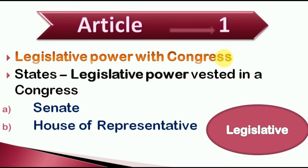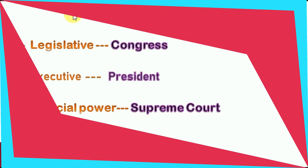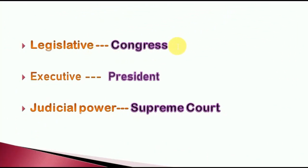Congress is called the Parliament. The Parliament has two houses: the Senate and the House of Representatives. These two houses use the legislative power — it's the law-making process. The legislative power will be given to Congress.